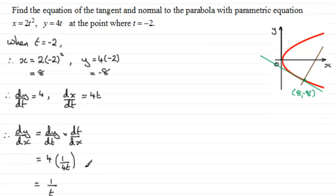So now that we've got the gradient of the tangent in general, 1 over t, we can find it at the point when t equals minus 2. So when t equals minus 2, we therefore have dy by dx equals 1 over minus 2, in other words, minus 1 half.